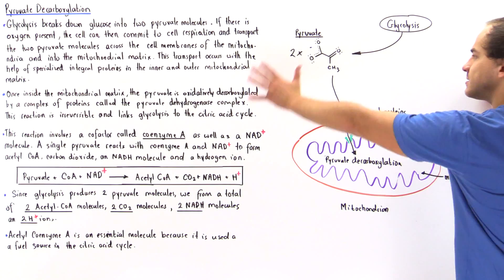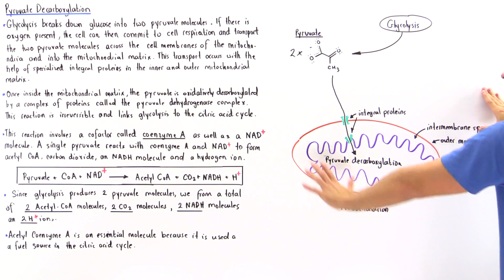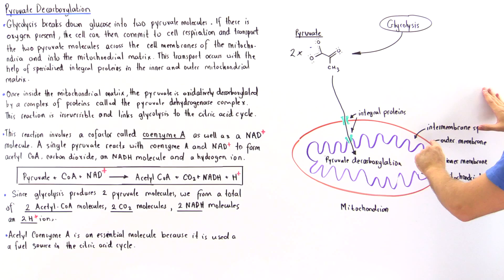Let's say this is the cytoplasm of the cell. This is the mitochondrion, which contains the outer membrane, the inner membrane, the intermembrane space, and the mitochondrial matrix.